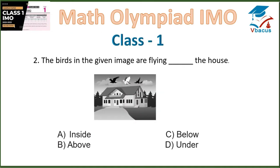Question 2: The birds in the given image are flying dash the house. Birds are there, they are flying. They are not flying inside the house, not flying below the house, not flying under the house. So they are flying above the house. Option B is correct.